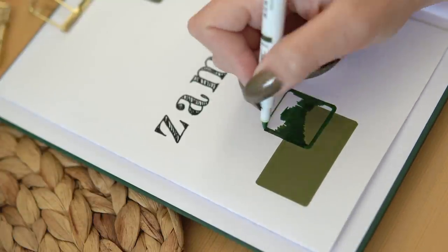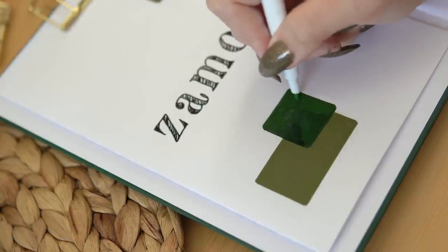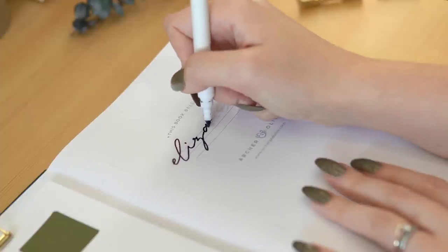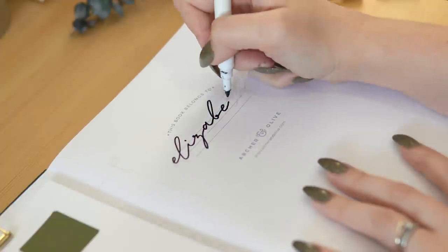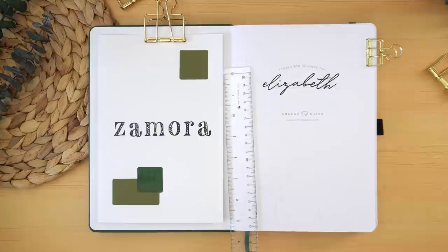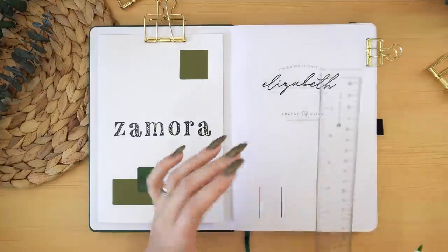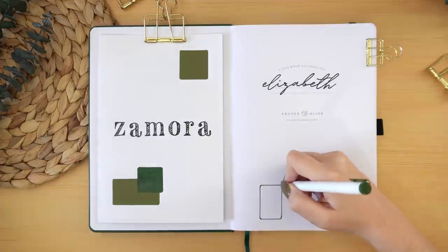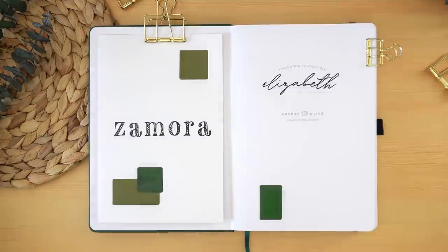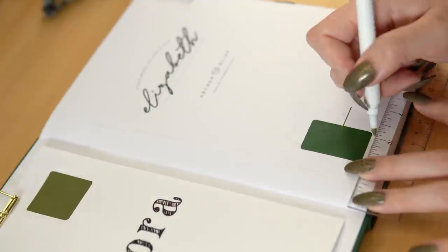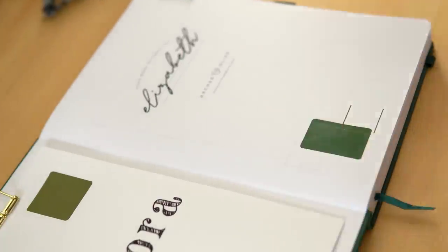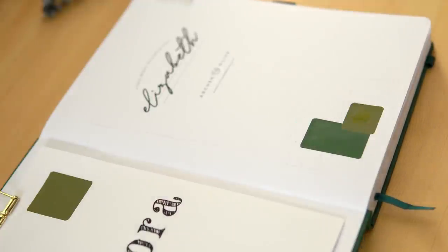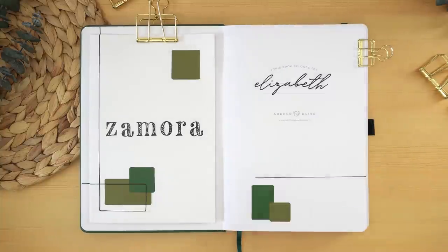To add something a little different, I decided to round all of the corners of the squares and rectangles. As I have for my last couple notebooks, I decided to name this bullet journal. The name I chose this time was Zamora, which is a Spanish name that means 'wild olives'—felt appropriate since this is the Olive notebook.